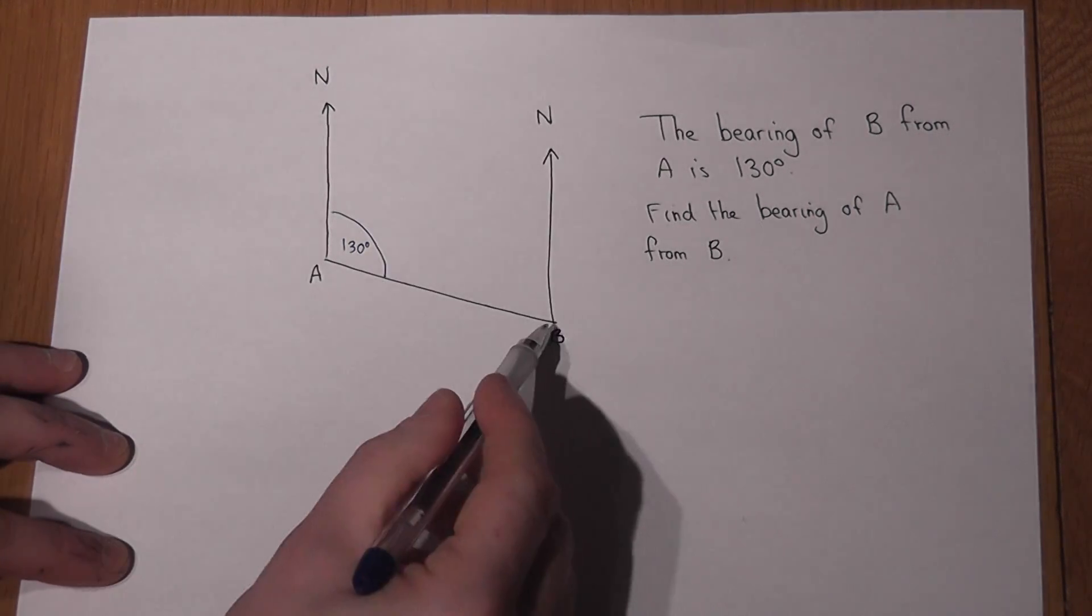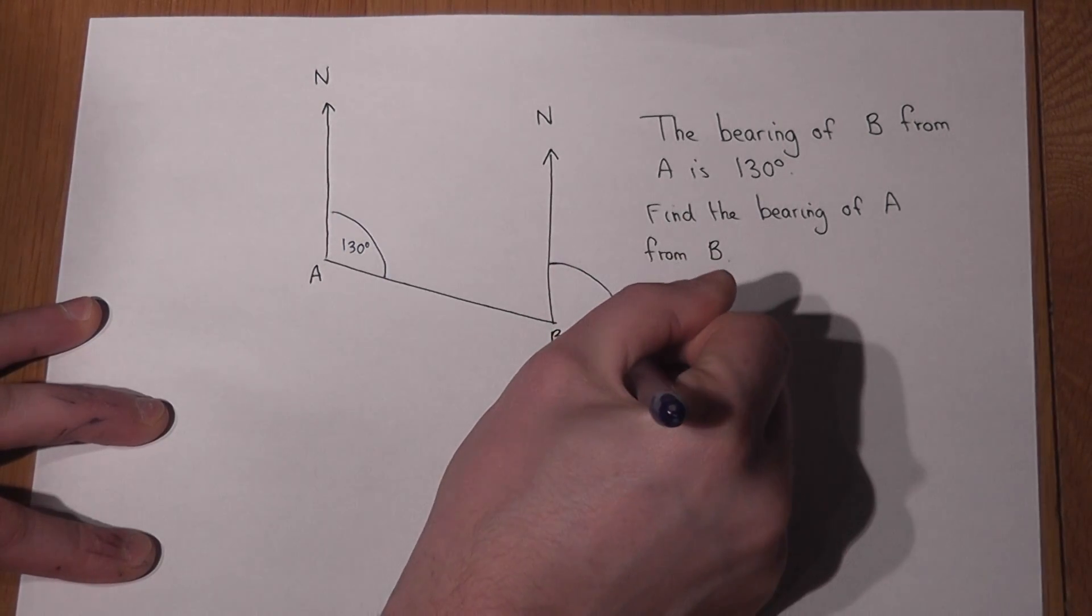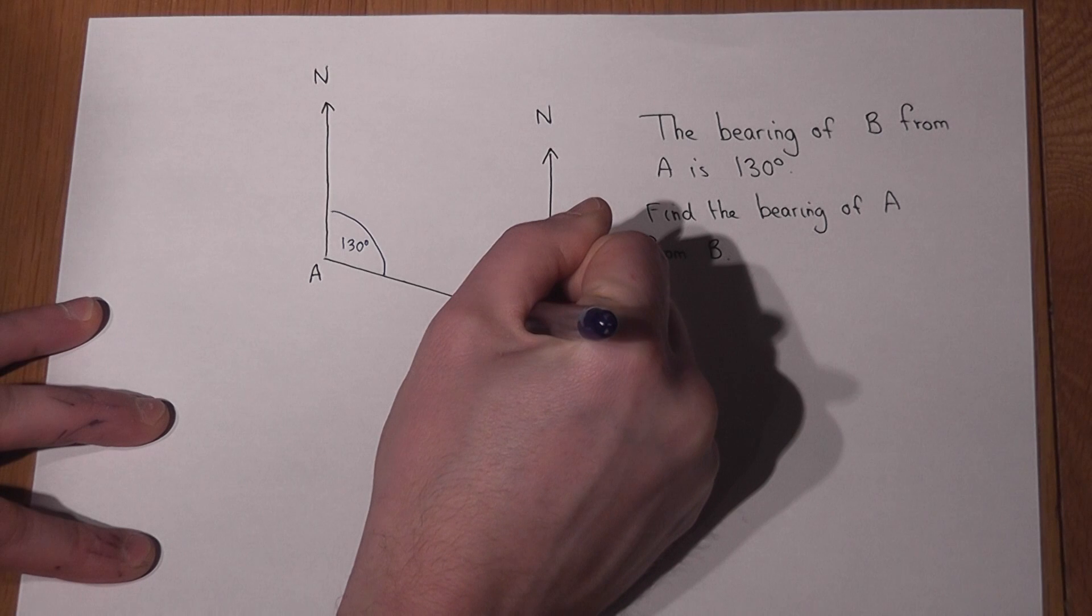find the bearing of A from B. In other words this big clockwise angle from north.